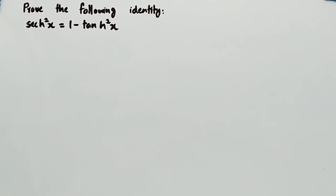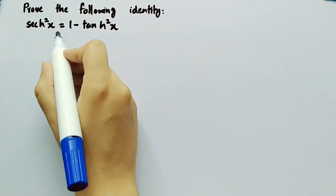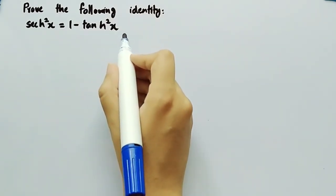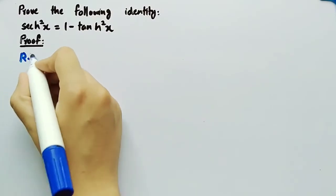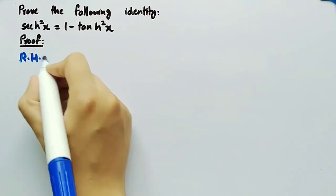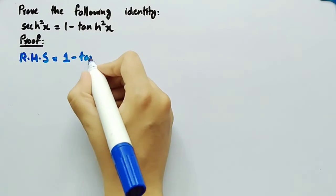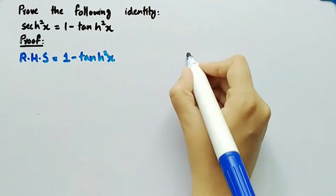In this video, we will prove an identity that sech²x is equal to 1 minus tanh²x. Coming towards its proof, we will firstly take its right hand side, that is equal to 1 minus tanh²x.